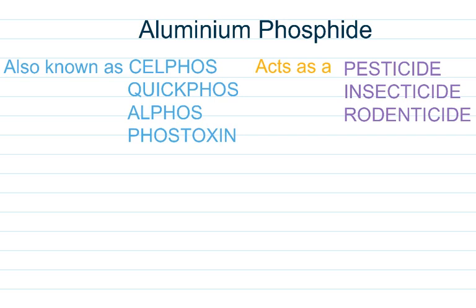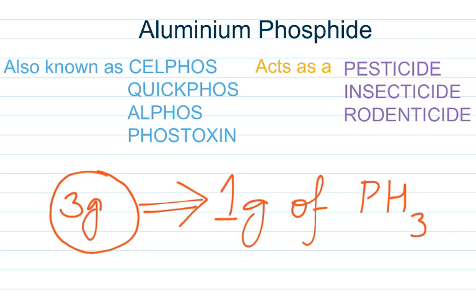It is also used as a pesticide, insecticide and rodenticide. It is widely used as a grain preservative. A white tablet of Cellphos weighing 3 grams has the capacity to liberate 1 gram of Phosphine gas.